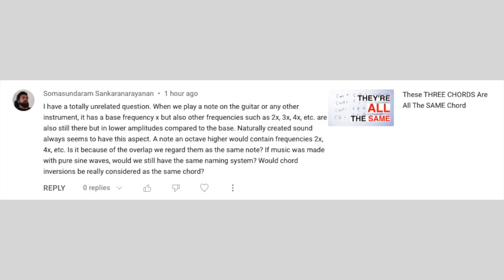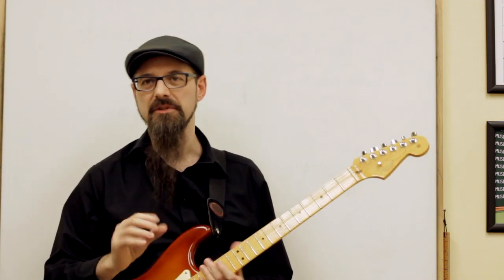The question is: when we play a note on the guitar or any other instrument, it has a base frequency x, but also other frequencies such as x2, x3, x4, etc., which are also present but at lower amplitudes compared to the base. First thing: it's not true that the base frequency — which technically is the fundamental frequency, not the bass — has a larger amplitude than the other frequencies. There are many situations where it doesn't.